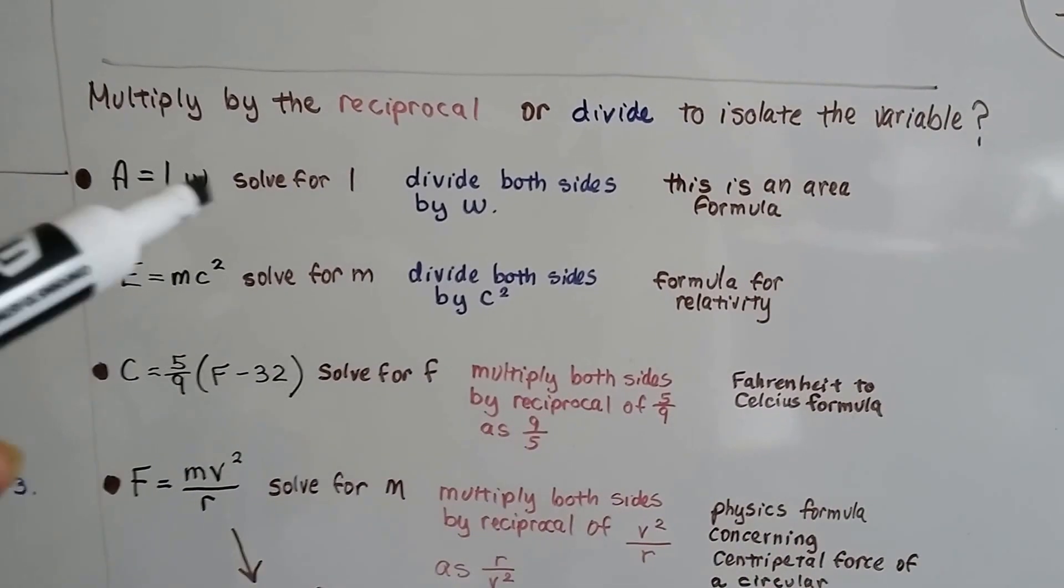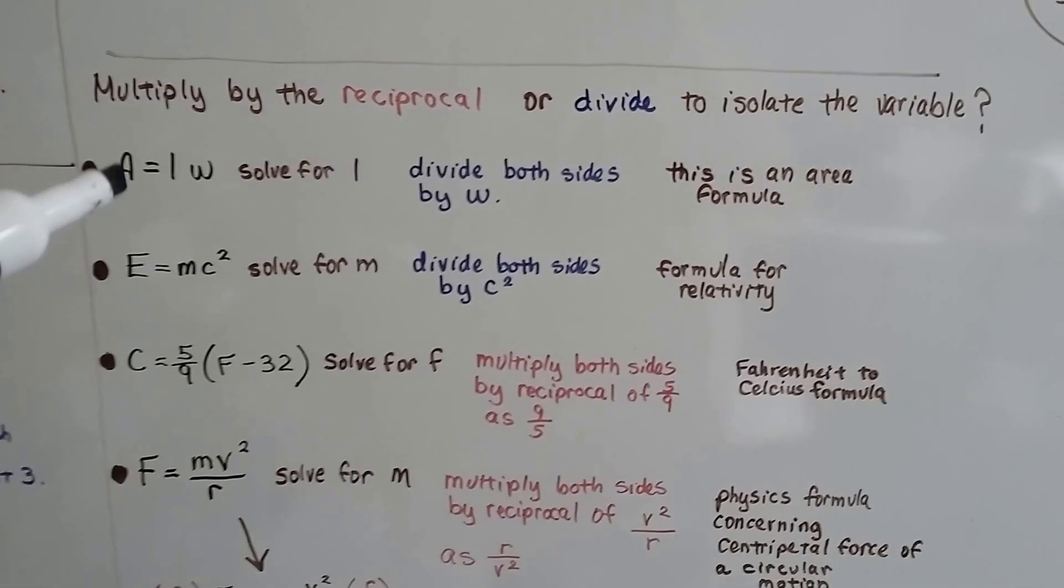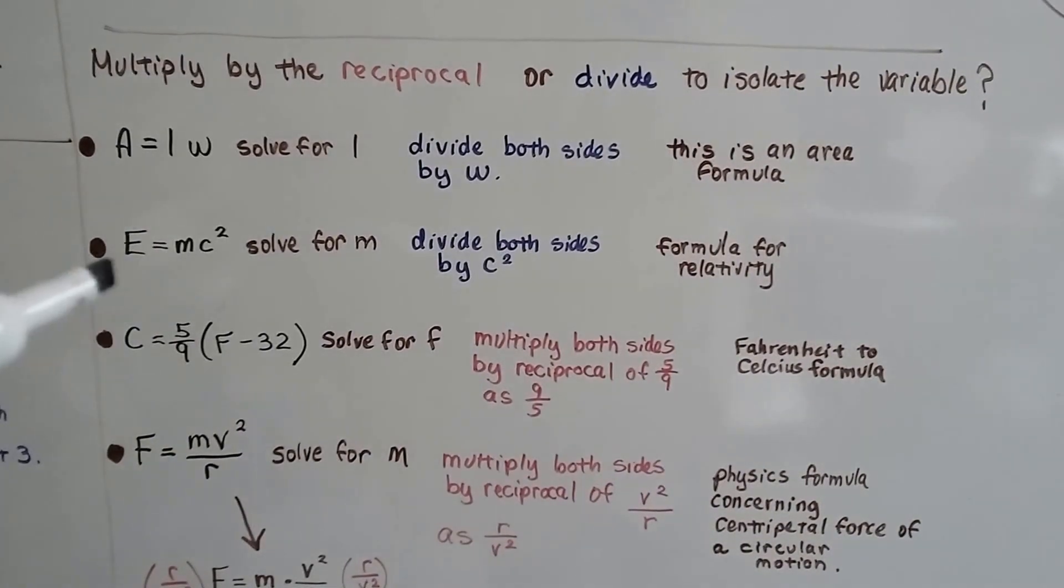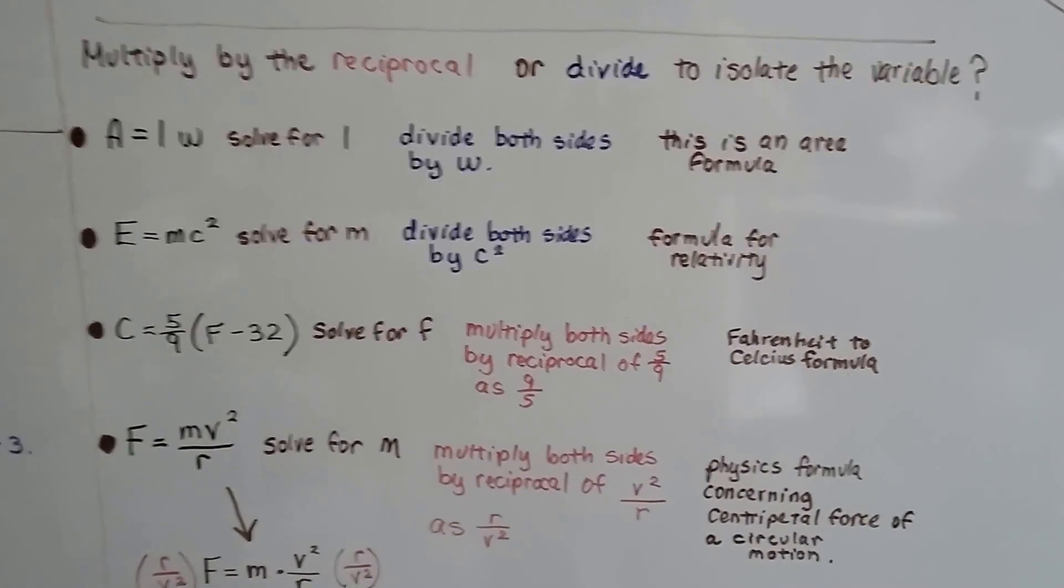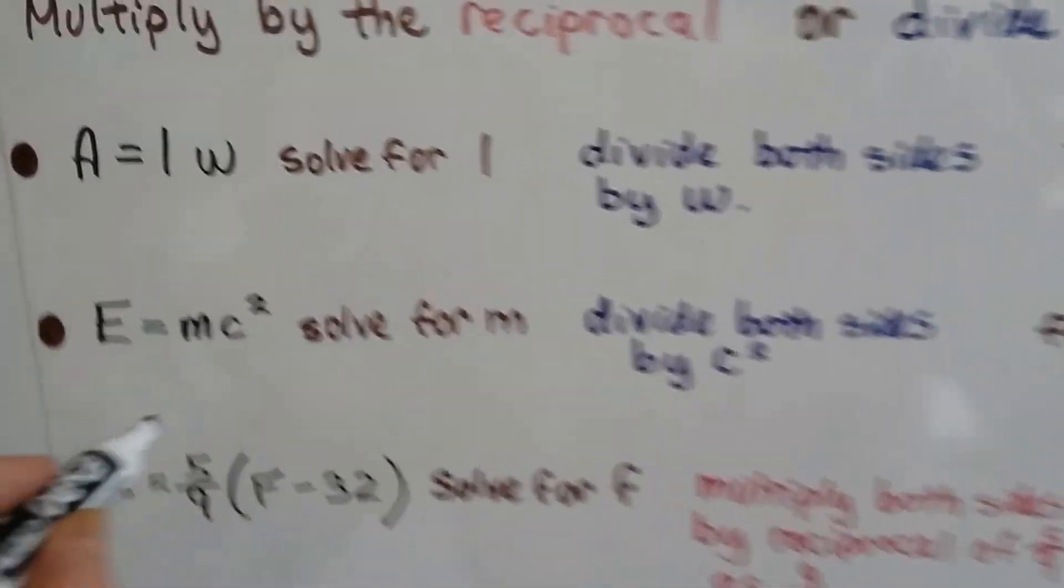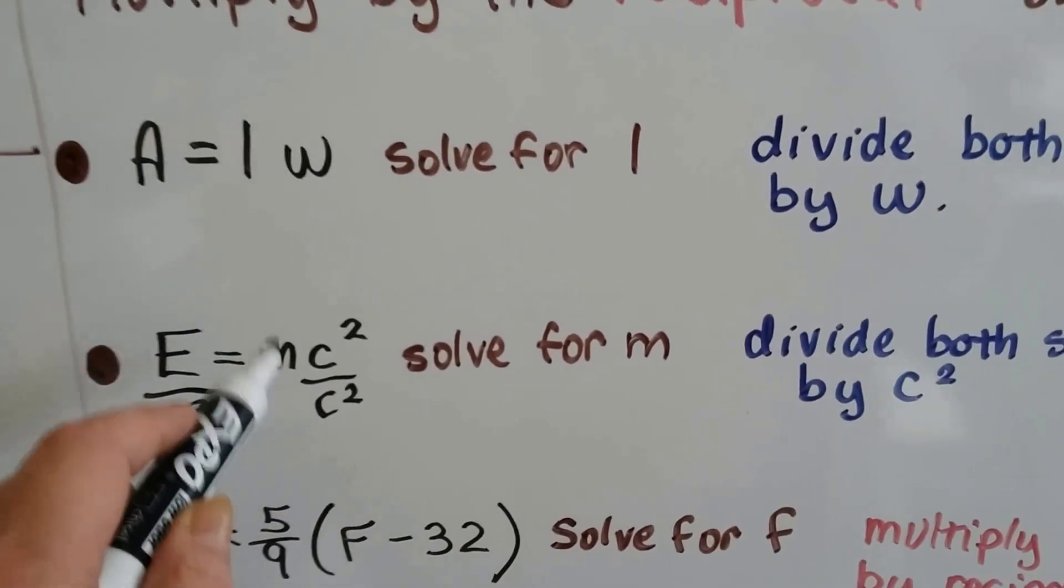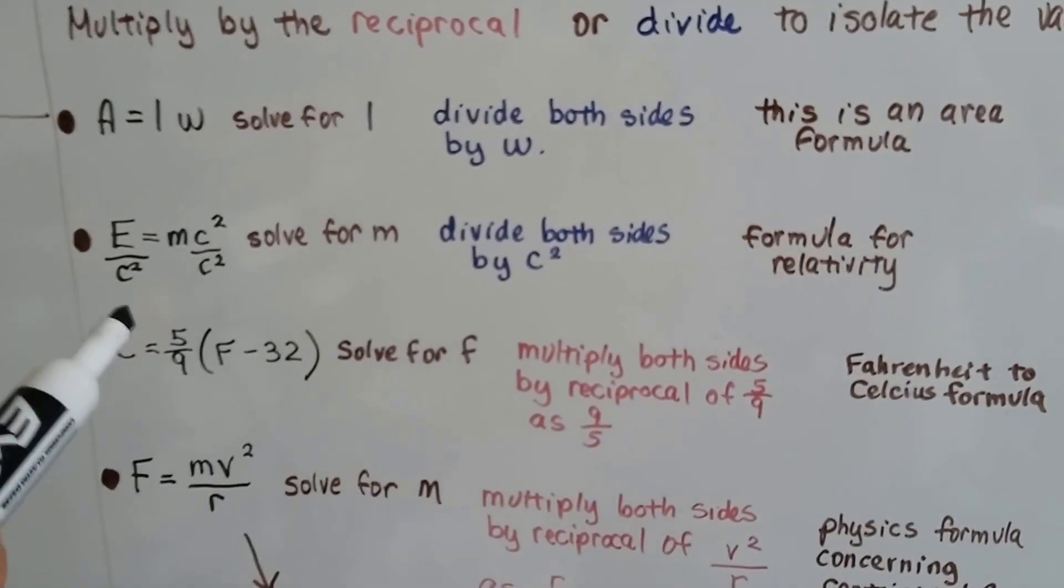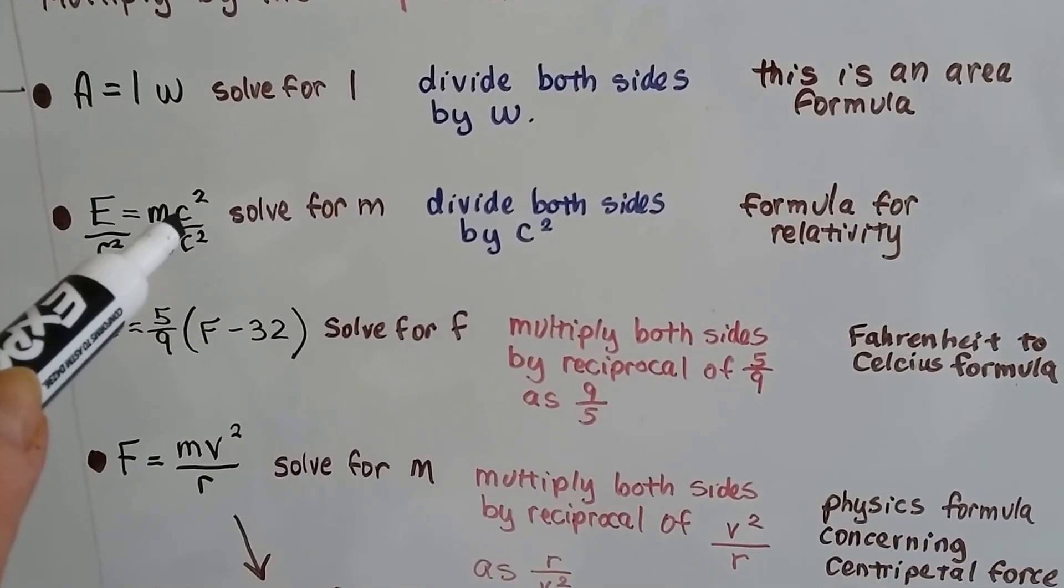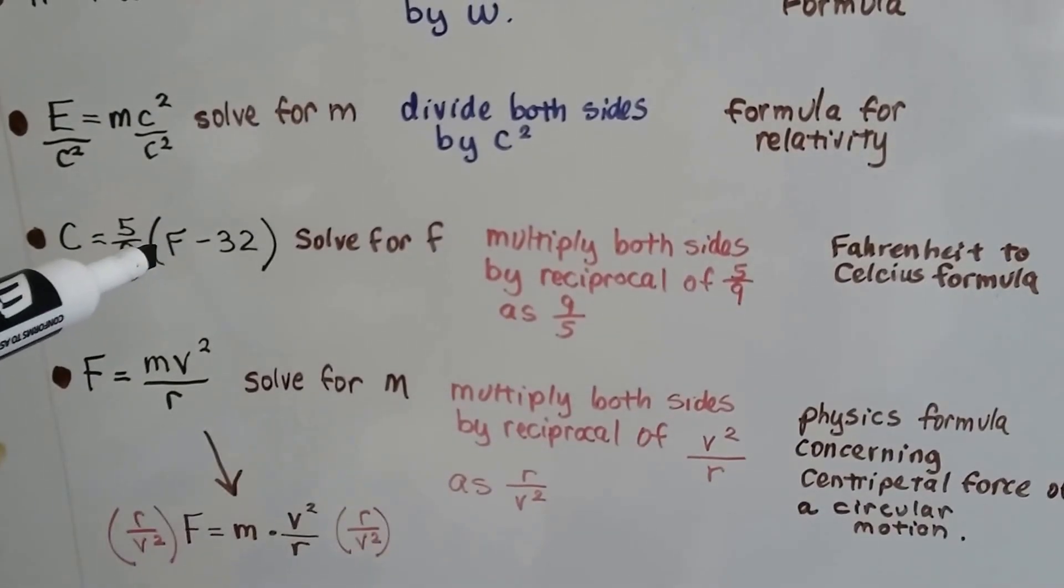There's no fraction here, so to solve for L, we can just divide both sides by the W right away and get A over W. That's the formula for area. How about this one? Well, to solve for M, there's no fraction here, so we can just divide both sides by C squared. We can just divide both sides by C squared to isolate that M. That's a formula for relativity. Does that look familiar? Einstein's energy equals mass times the speed of light squared.